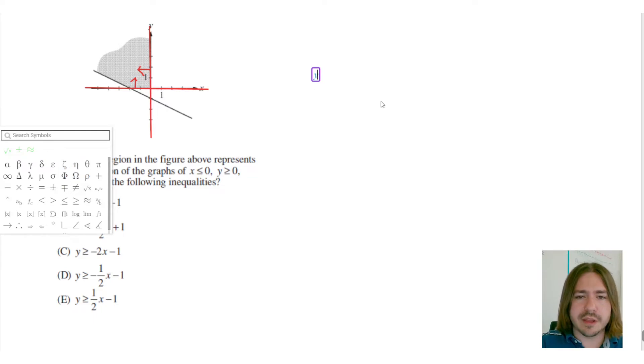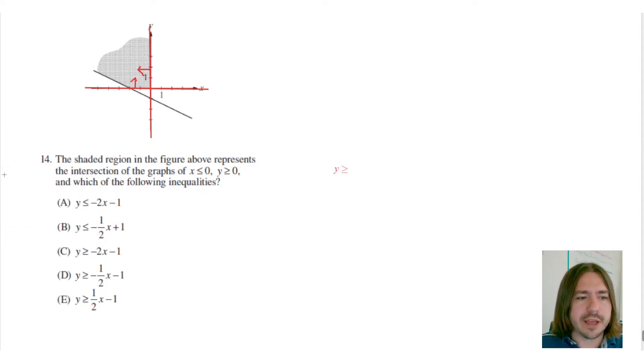And so that means I'm gonna start writing my inequality as y is greater than or equal to something, because I'm going to be shading up. If it was shading below the line it would be less than. So right away I can take out choice A and choice B because those are both saying less than, and I know that it can't be less than.